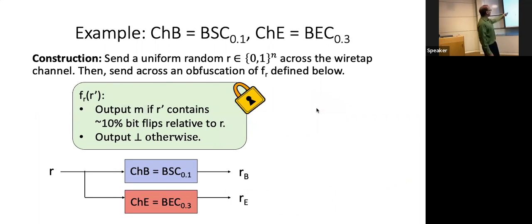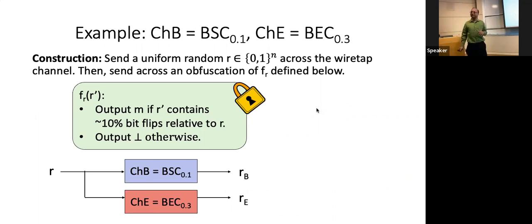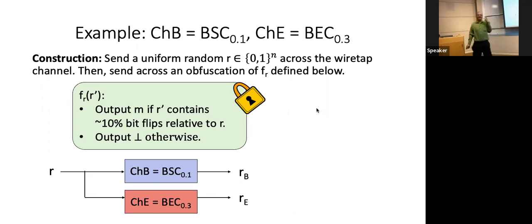That's the solution — really simple. The function has R built into it as a constant, takes an input R', checks if it's roughly 10% in terms of bit flips from R. If so, it just outputs the secret message M directly. If it's significantly different from 10%, it outputs bottom. That's it — this is the power of obfuscation. Obfuscation is such a powerful tool because it intuitively just sends across functions. Eve has access to the function but can't look inside it — can't find M because it's obfuscated. Eve has 30% erasures, so what are the chances she could find an R' with only 10% flips in her polynomial time? There's an exponential space of possible R' values.